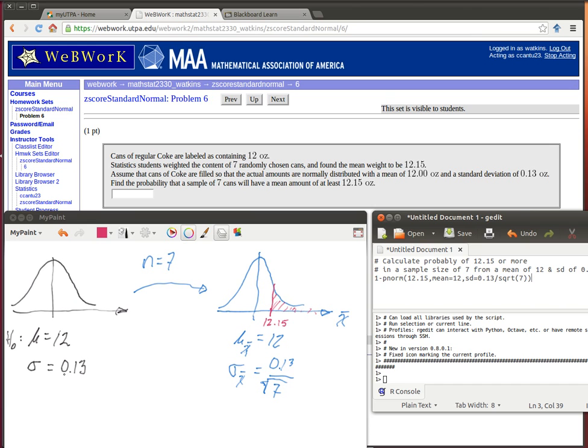And somehow we got this standard deviation of the population as well. So what we want to find is this red probability. The probability of being above 12.15. What we can find with R is this yellow area back here.